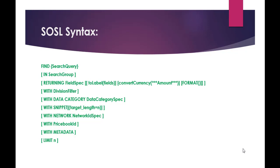As you can see, there is the find clause — the required clause — and then the text that you want to search. Then you have optional clauses like search group, returning the field spec to specify which fields to return, and convert currency. If the currency of the user and the organization differ, you can use that to convert to the user's currency.